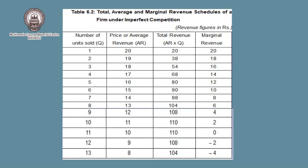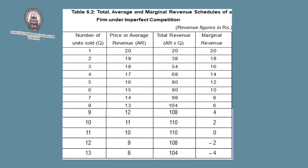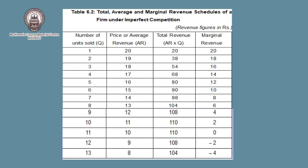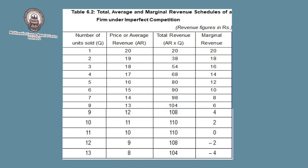From Table 6.2, when the price or average revenue was 20, the seller sells 1 unit, total revenue is 20 and marginal revenue is 20. At price 19, he sells 2 units, total revenue becomes 38 and marginal revenue is 18 (38 minus 20). Similarly, when he sells 3 units at price 18, total revenue becomes 54 but his marginal revenue becomes 16 (54 minus 38).